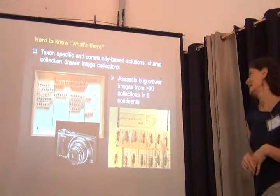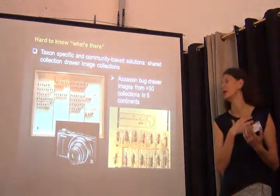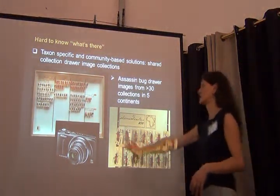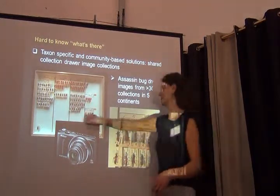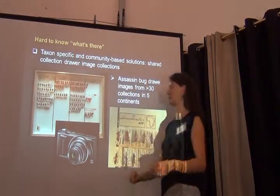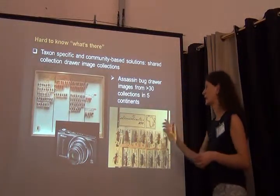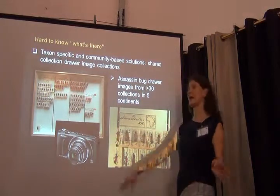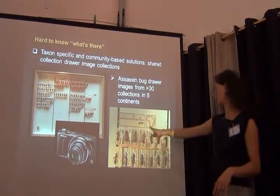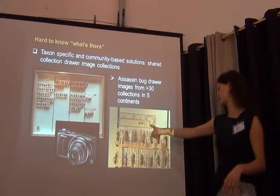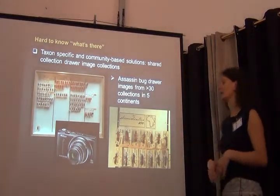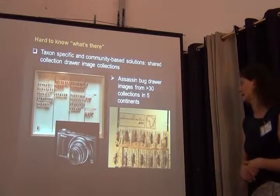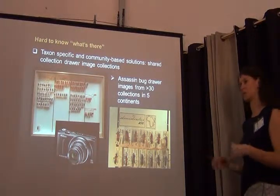One way of dealing with that is what I would call community-based solutions. For some projects I've worked on — for Redewilds in particular — whenever I get a chance to visit a collection, I make a simple overview picture of the drawer. That's not good enough to see the information on the insect specimen, but typically I also take four closer-up pictures with a simple Nikon camera. The image quality of specimens and labels is not perfect, but it does help. We make that available to other people working on Redewilds worldwide, and it's helping us know what's in which collection.